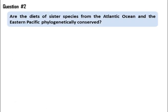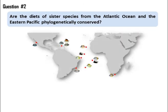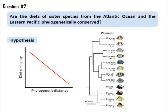For the second question, we asked: are the diets of sister species from the Atlantic Ocean and the Eastern Pacific phylogenetically conserved? For this question, we used a more detailed diet classification of 8 Chaetodon and 4 prognathoid species, testing the hypothesis that closely-related species will possess similar diets.